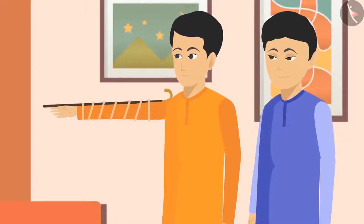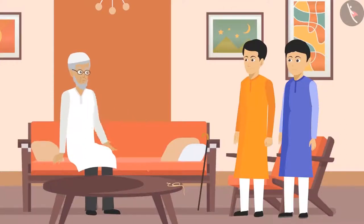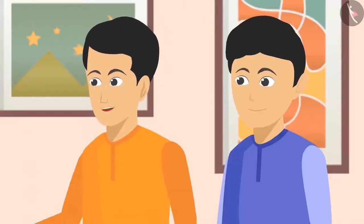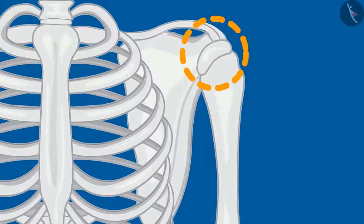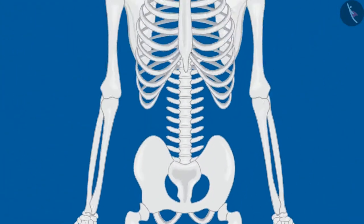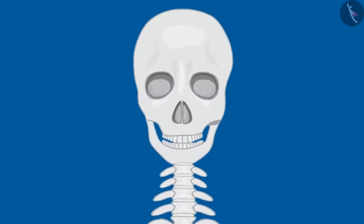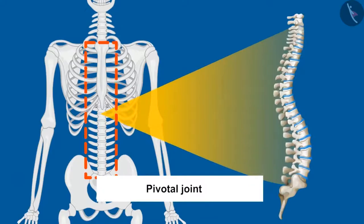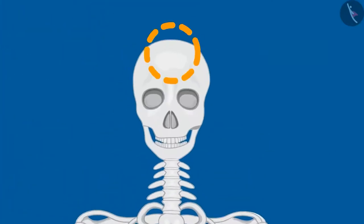'Very well, kids! Now tell me, how many types of joints are there in our body?' 'Chacha ji, there are many types of joints. Ball and socket joints connect the bones of our hands to the shoulders and thigh bones to the hips. Pivotal joints keep our head attached to the spinal cord. Other than these, we also have hinge joints and fixed joints.'